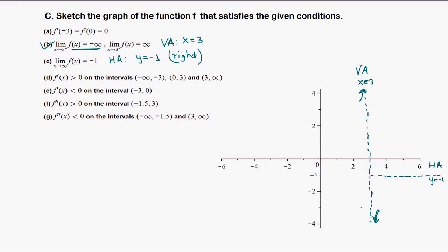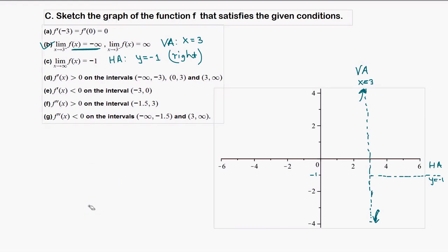So whenever we have two asymptotes, the graph will look like one of two shapes. In this case we have the horizontal asymptote only on the right side. We'll determine in a moment whether the function is decreasing or increasing in that region.